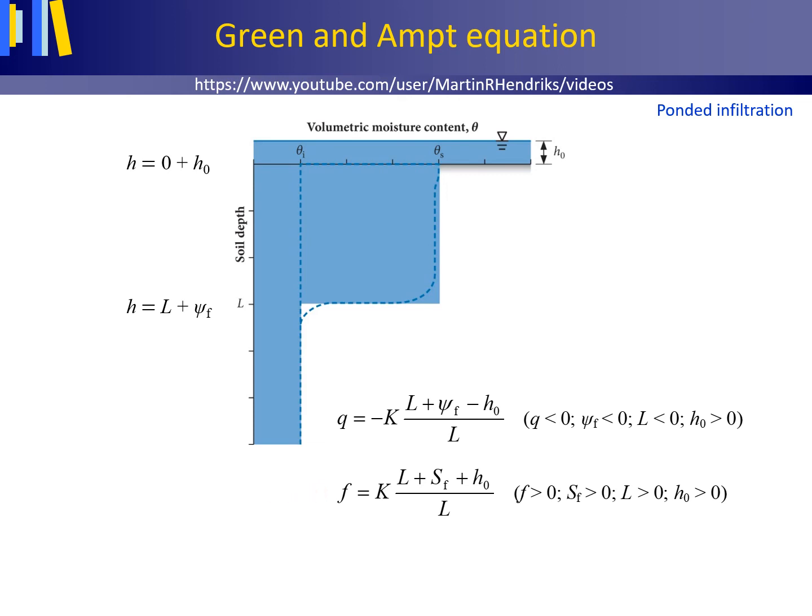The Green-Ampt equation for ponded infiltration applies particularly to infiltration into uniform, initially dry, coarse-textured soils that exhibit a sharp wetting front. Although the Green-Ampt equation is derived from a model — thus a simplification of reality — it provides important insights into the infiltration process, which can be verified by infiltration experiments, for instance by using a double ring infiltrometer or rainfall simulator.